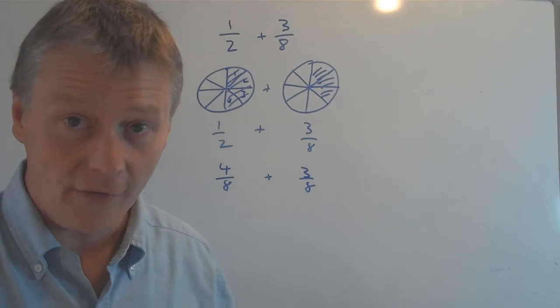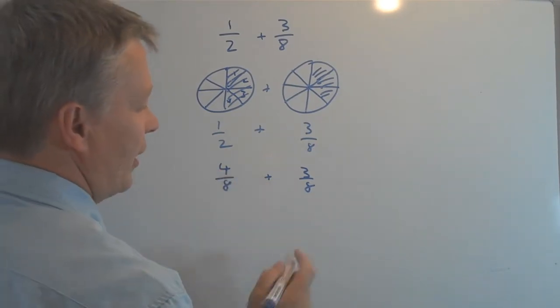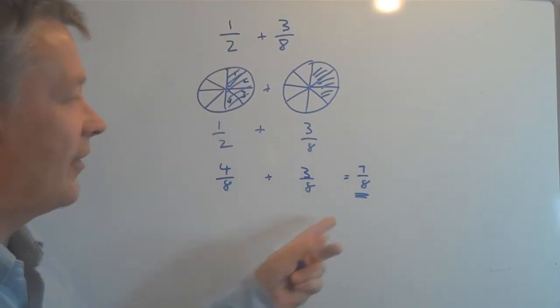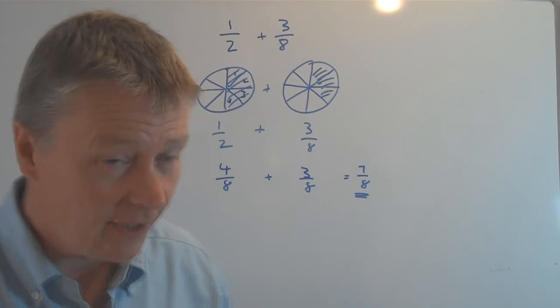Well, if I add those two together, I've got four plus three, which is seven. So I've eaten, or we've both eaten together, seven eighths of a pizza.